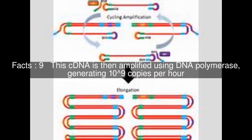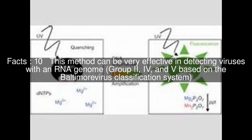This cDNA is then amplified using DNA polymerase, generating 10⁹ copies per hour. This method can be very effective in detecting viruses with an RNA genome — groups 2, 4, and 5 — based on the Baltimore virus classification system.